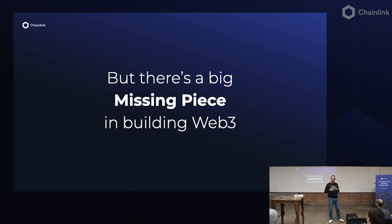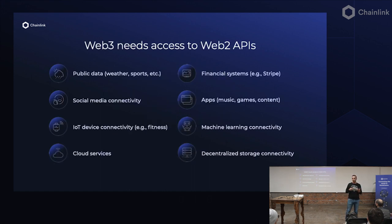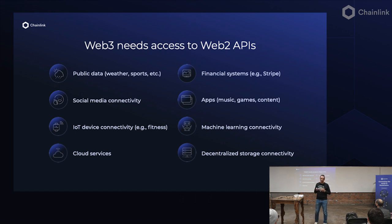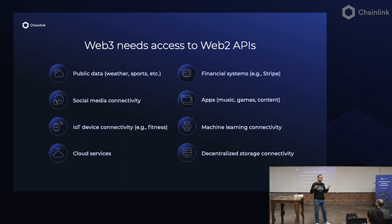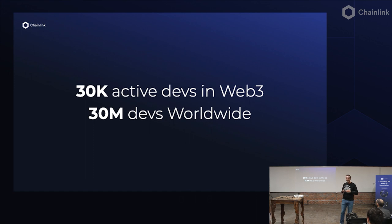If you want Web3 to have real world impact, there's something missing, and that is connecting to Web2 APIs. We've seen what happened when we just connected smart contracts with crypto prices — the whole DeFi field appeared. $7 trillion of transactions were enabled on Chainlink last year alone. That's incredible, that's mind-blowing. But there's just so much more data out there. Think about all the fields seeing massive breakthroughs — think about AI. Everything's happening in AI, and it's not accessible to smart contracts because this connection does not exist.